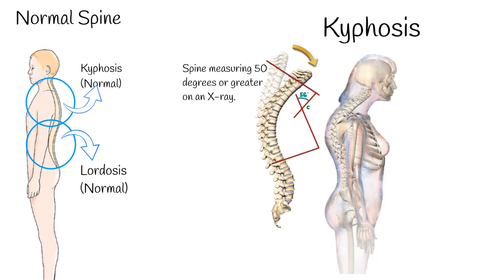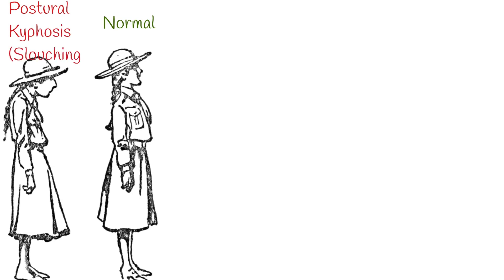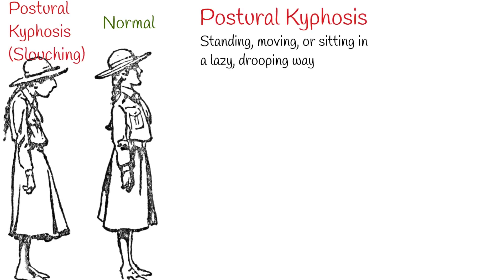Kyphosis can be of different types. The most common type is postural kyphosis, caused by slouching, standing, moving, or sitting in a lazy, drooping way. In the young, it can be called slouching and is reversible by correcting muscular imbalances and exercises. This type of kyphosis is flexible and often improves with exercises.